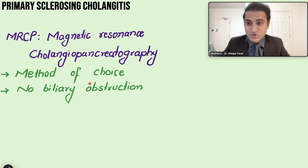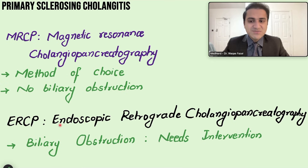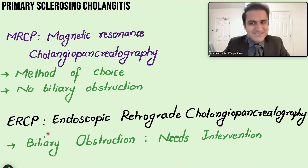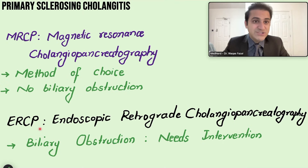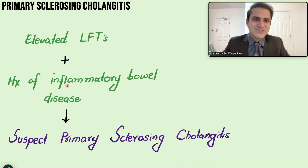MRCP — magnetic resonance cholangiopancreatography — is the method of choice when there is no biliary obstruction. ERCP — endoscopic retrograde cholangiopancreatography — is used when there is biliary obstruction requiring relief. Remember that ERCP poses risks of ERCP-induced pancreatitis and cholangitis.